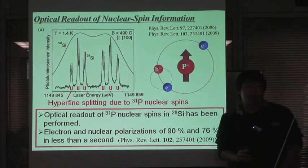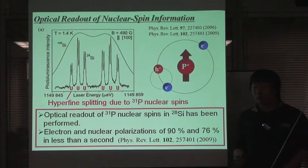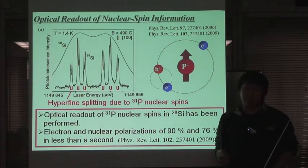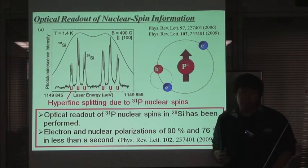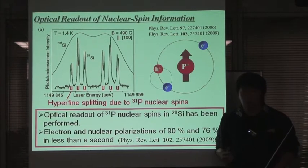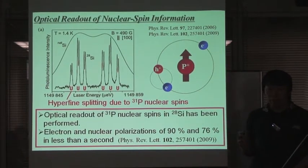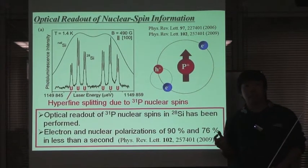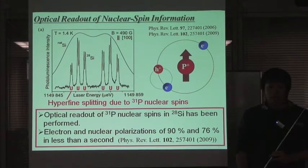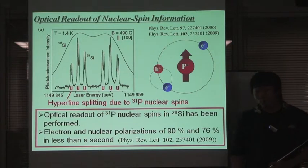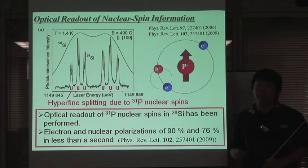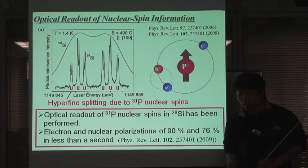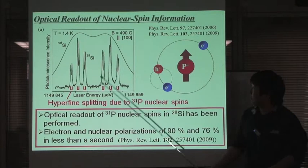Readout of a nuclear spin state is a key technology for realization of quantum information and quantum computers. Especially, optical readout has many advantages for both long-range information transmission and the initialization of the qubits by optical method. Nowadays, it has been reported that photoluminescence spectroscopy performs the optical readout of a nuclear spin state in silicon, as shown in this figure.